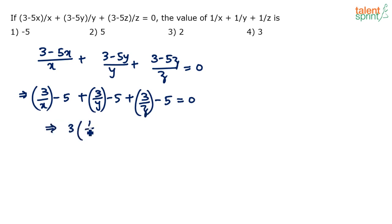3 times of 1 by x plus 1 by y plus 1 by z minus 5 minus 5 minus 5 is minus 15. Take it to the other side, it gives you plus 15. So 3 goes 5 times. And that's what we need, right? 1 by x plus 1 by y plus 1 by z equals what? It is equal to 5. Look at this, value of 1 by x plus 1 by y plus 1 by z. It is 5, option 2. So simple one, right?